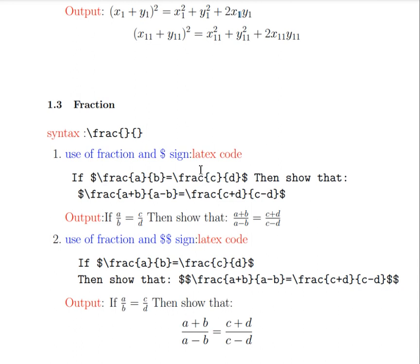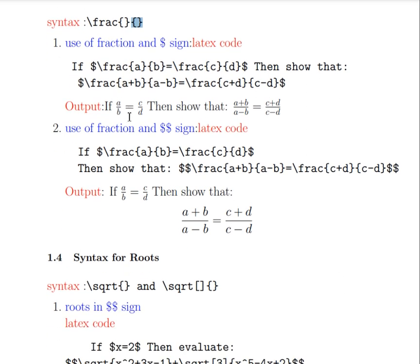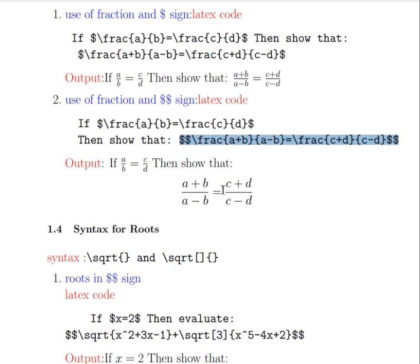For fractions — writing a by b or c by d — the syntax is backslash frac with two curly brace pairs: the first for the numerator and the second for the denominator. So for a by b, you write backslash frac curly a curly b, which outputs a over b. You can use inline math mode with single dollar signs or display math mode with double dollar signs for fractions.